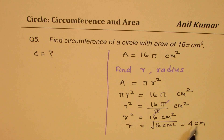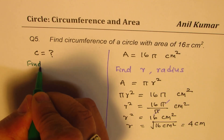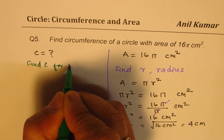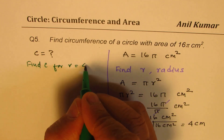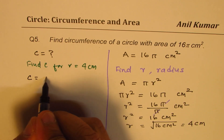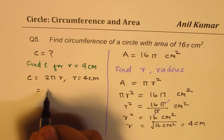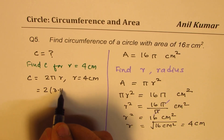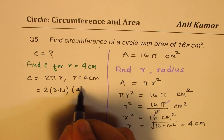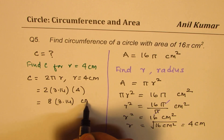So, 4 centimeters is the radius. Now, the second step: find circumference C for R equals 4 centimeters. Circumference C equals 2πR. We know R is 4 centimeters, so circumference is 2 times 3.14 times 4, which is 8π centimeters.